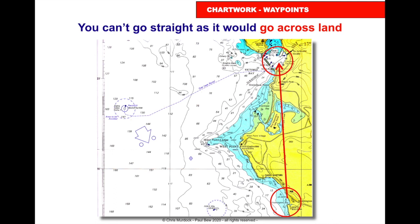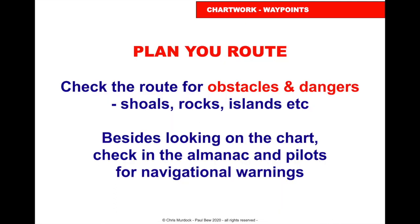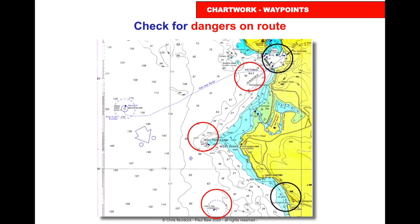It's Stubbington to Victoria — going across the land, you can't do that. So we need to plan our route, check the route for obstacles, dangers, shoals, rocks, and islands. As well as looking at the chart, check the almanac and pilots for navigation warnings and dangers on route.